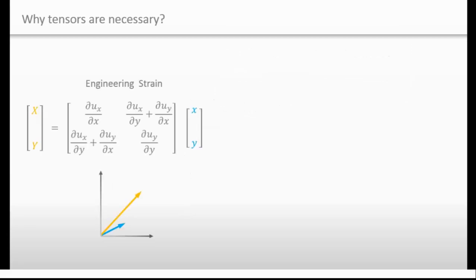Generally speaking, like an engineering strain, if someone changes the coordinate system, the computed yellow arrow will change. I will give you a question. What if an inertia tensor was not a tensor, but just a matrix? What would happen?